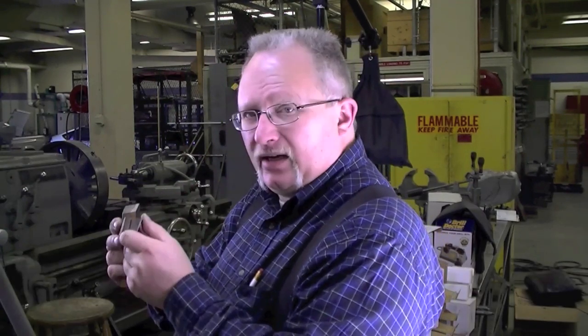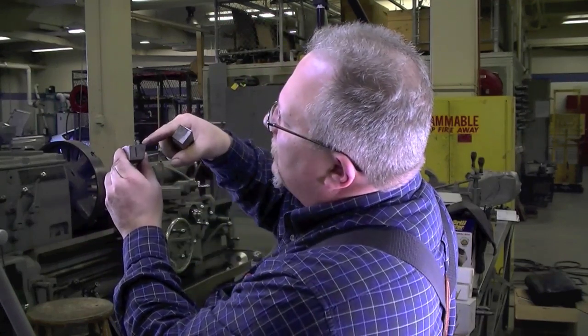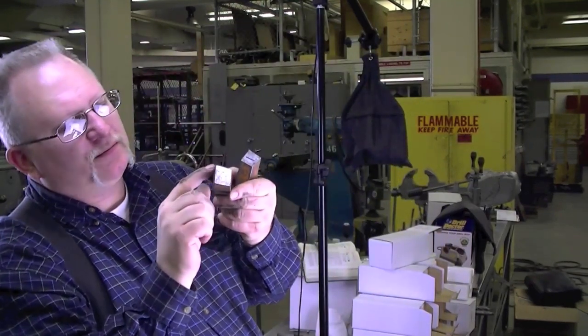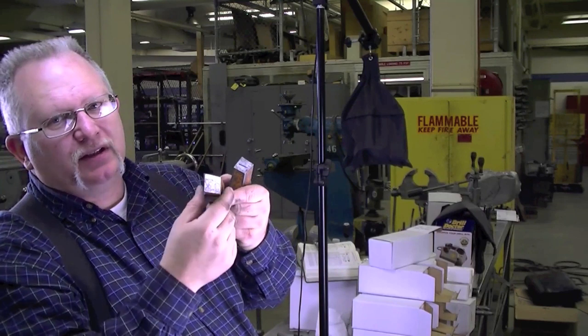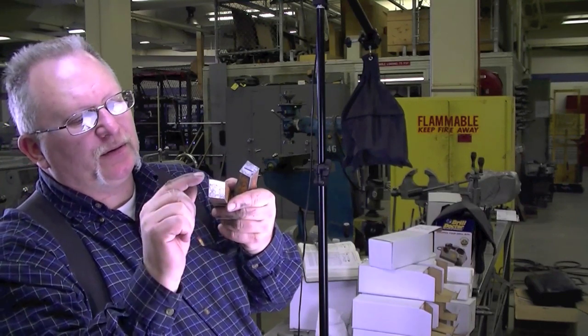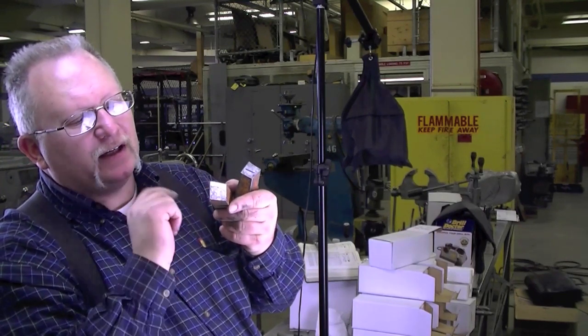This is a right hand tool bit. You can tell because if you look at the business end, the cutting edge is on the right. This is a left hand for exactly the same reason. If you're looking at the end of it, the business end, the cutting edge is on the left.